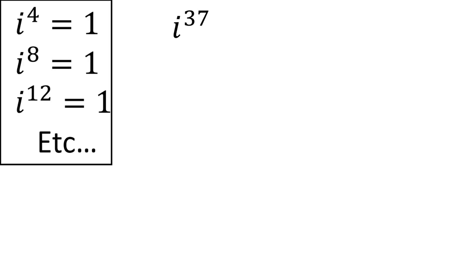Now if you are given a higher power of i, such as i to the 37th power, there are a few ways you could simplify it. My preferred method is to remember that i to the fourth power, as well as i to the eighth, twelfth, or any multiple of 4 power, is equal to 1. So in this case, you could rewrite the problem as i to the 36th power times i.